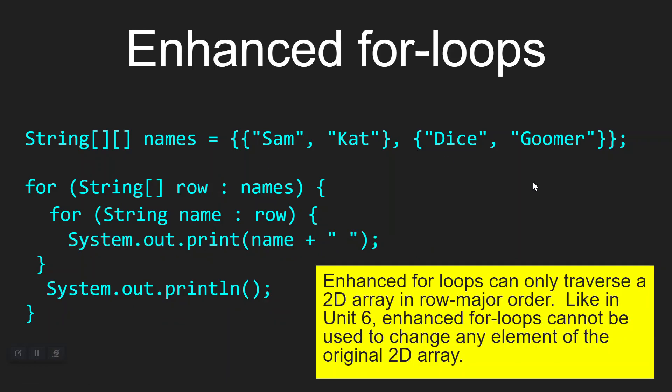Enhanced for loops can only traverse a 2D array in row major order. Like in Unit 6, enhanced for loops cannot be used to change any element of the array, and you cannot do column major traversal with them. They offer slightly more condensed syntax but are limited in what they can do.